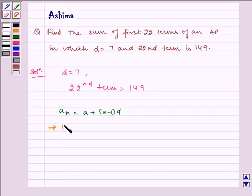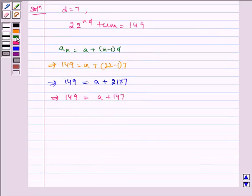So we substitute: 149 equals a plus (22 minus 1) multiplied by 7, which implies 149 equals a plus 21 times 7, which implies 149 equals a plus 147, which implies a equals 149 minus 147, which implies a equals 2.